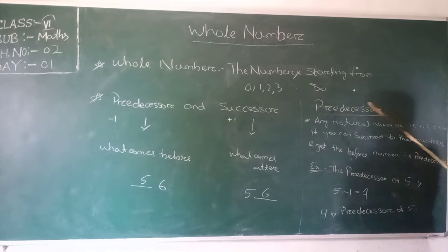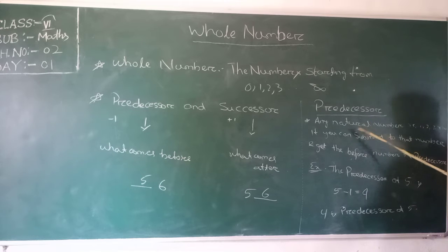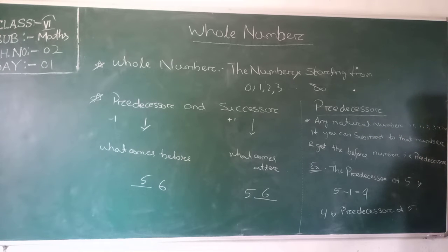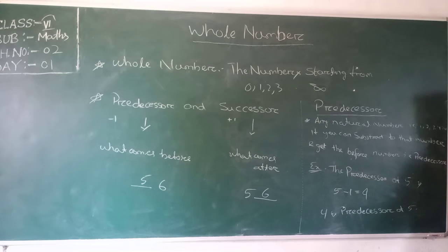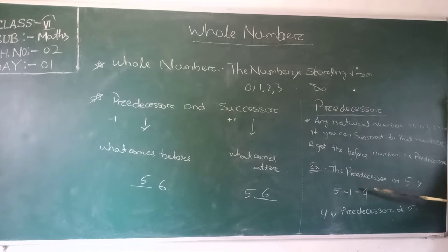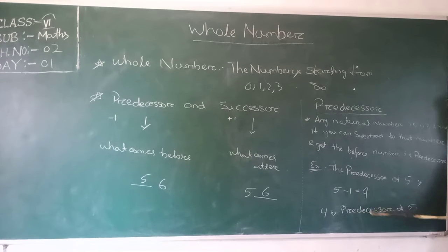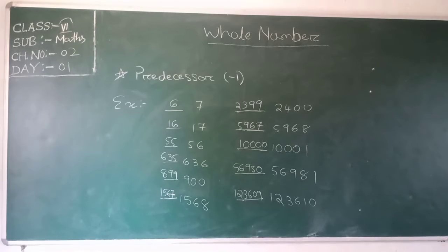What is a Predecessor? For any natural number — 1, 2, 3, 4 up to infinity — if you subtract 1 from that number, you get the number before it, and that is the predecessor. For example, the predecessor of 5 is 5 minus 1 equals 4. So 4 is the predecessor of 5.